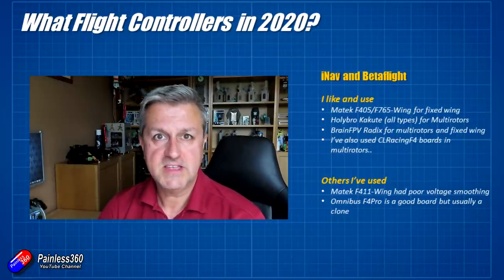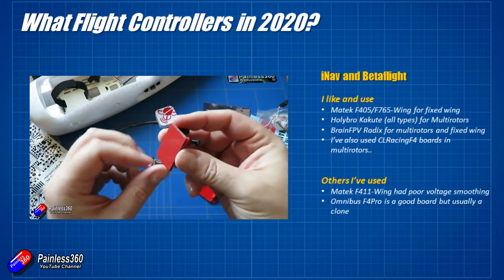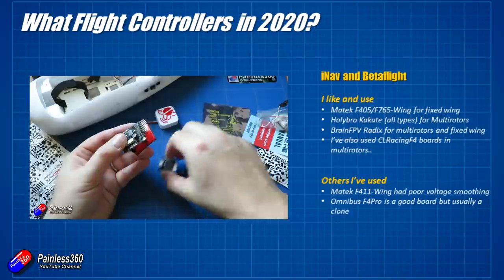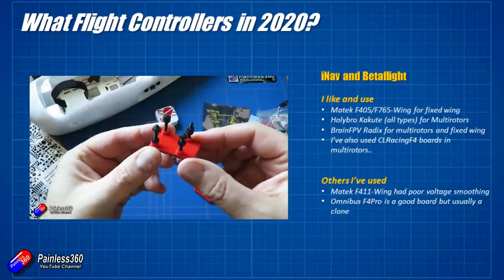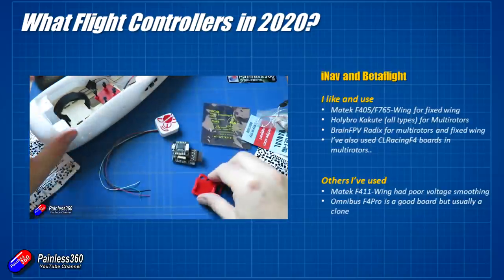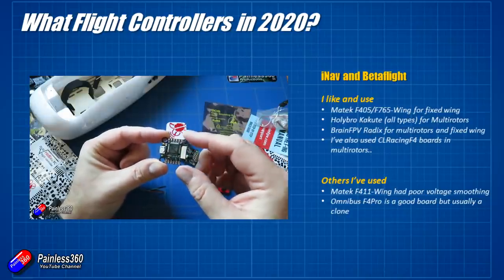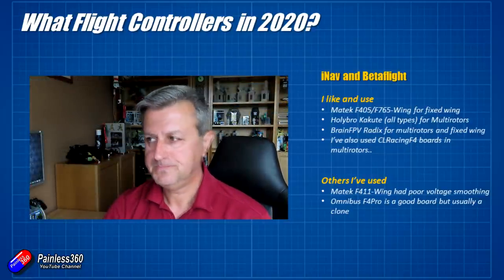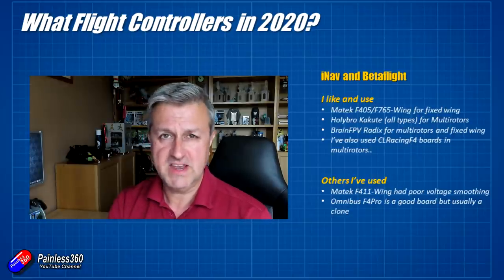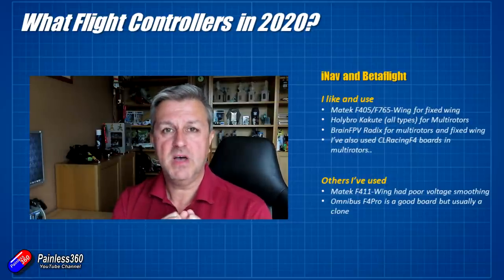Another flight controller I'm a huge fan of is the BrainFPV Radix. BrainFPV are a little bit unusual - they take Betaflight or iNav and add support for a vector-based on-screen display that's part of that flight controller. That provides a really beautiful on-screen display if you're flying FPV. There are a couple of power distribution boards that fit underneath, supporting either multirotors or fixed wing. It's a really nice option and provides a really different on-screen display that just looks absolutely beautiful. I've also used CL Racing flight controllers - a lot of the Armattan stuff I look at on the channel has CL Racing flight controllers in and they always perform really well. I did an Armattan build with a CL Racing F4S and it just worked beautifully. The pad layouts on them are really, really nicely thought out.